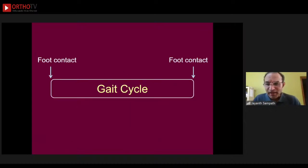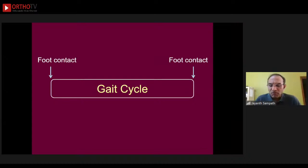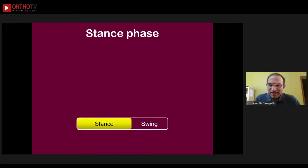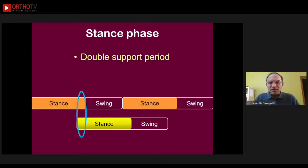The gait cycle is all the events that happen from foot contact to when the foot contacts the ground again — that constitutes one gait cycle. We all know that one gait cycle is divided into two parts: the stance phase of gait when the foot is in contact with the ground, and the swing phase when the foot is off the ground. The gait cycles of the two limbs do not occur at the same time — there is a slight difference in timing.